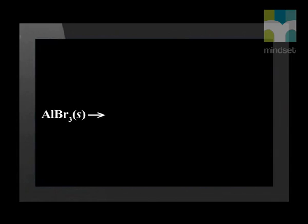By now we have a good idea of how to write balanced equations for these types of reactions. Let's do a couple that are slightly more complicated. Let's try writing the equation for the dissolution of aluminium bromide. Aluminium bromide breaks down into aluminium ions and bromide ions. Notice that aluminium forms an ion with a charge of positive 3. After we write an equation, we always need to check if it is balanced. There is one aluminium on each side — no problem there. There are three bromide ions on the left, so we place a 3 in front of the bromide ion on the right. Now there are three bromide ions on each side, and the equation is balanced.